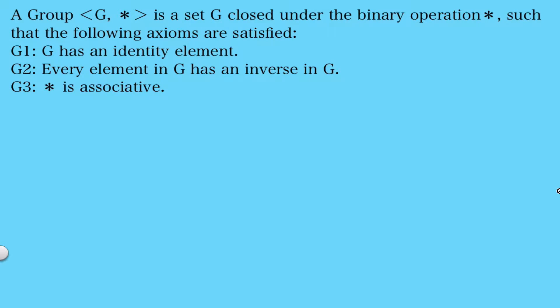In this video I'm going to look at some different binary structures and decide if they are groups or not. So first let's recall the definition of a group. A group is a set G closed under the binary operation star such that the following axioms are satisfied.